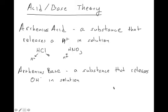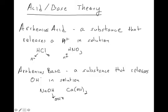An Arrhenius base is a substance that releases hydroxide ions in solution. Examples include sodium hydroxide and calcium hydroxide. When these substances dissolve, the OH is released — in the case of calcium hydroxide, two OH ions are released into solution. Those are Arrhenius acids and Arrhenius bases.